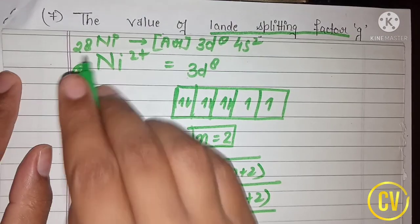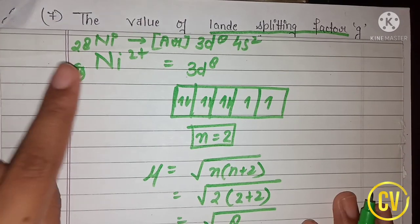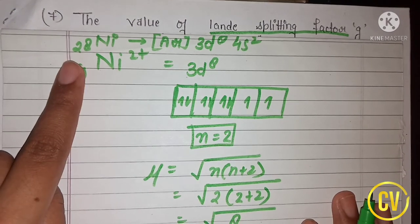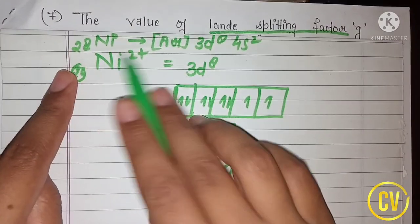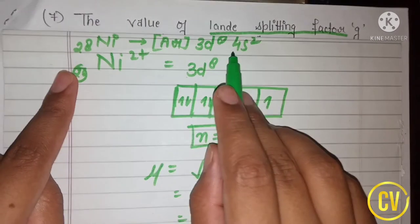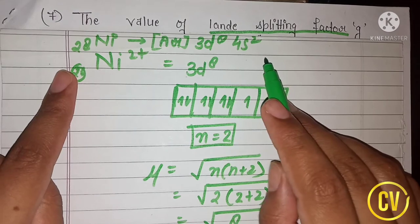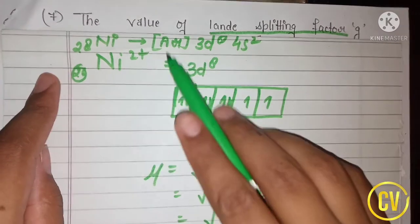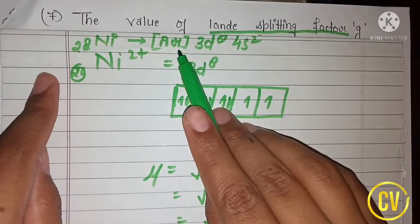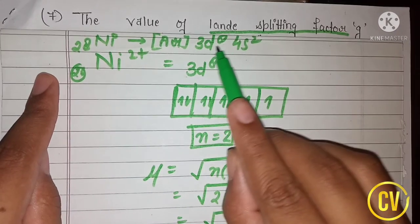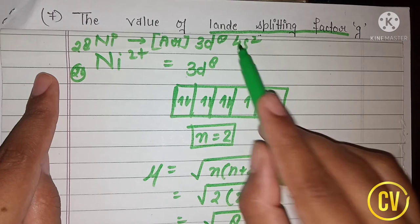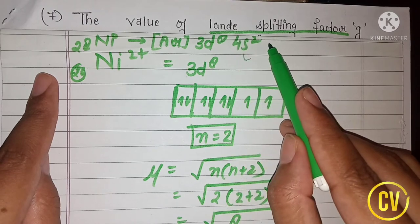The atomic number of nickel is 28. If we write the electronic configuration of nickel using the inert gas core, it is [Ar] 3d⁸ 4s².